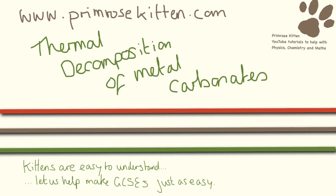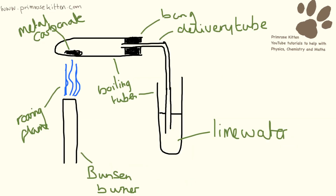This is an experiment you may well have done in class. If you have done it, what you will have done is got a boiling tube with a sample of metal carbonates, heated it — some of them are going to go quite quickly, some of them are going to take quite a long time — on a roaring flame, with a bung in the delivery tube going into some lime water.